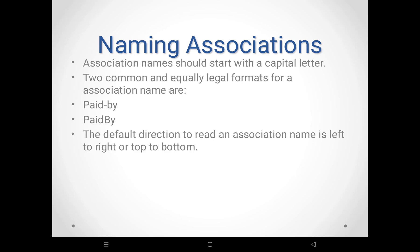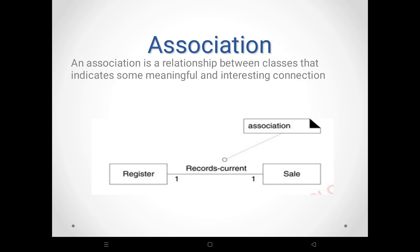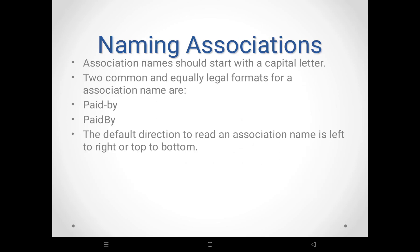What are the rules to be followed for naming the association? The first rule: association name should start with a capital letter. For example, 'Records-Current' is the association name — R is the capital letter. So the first naming convention is that every association name should start with the capital letter.